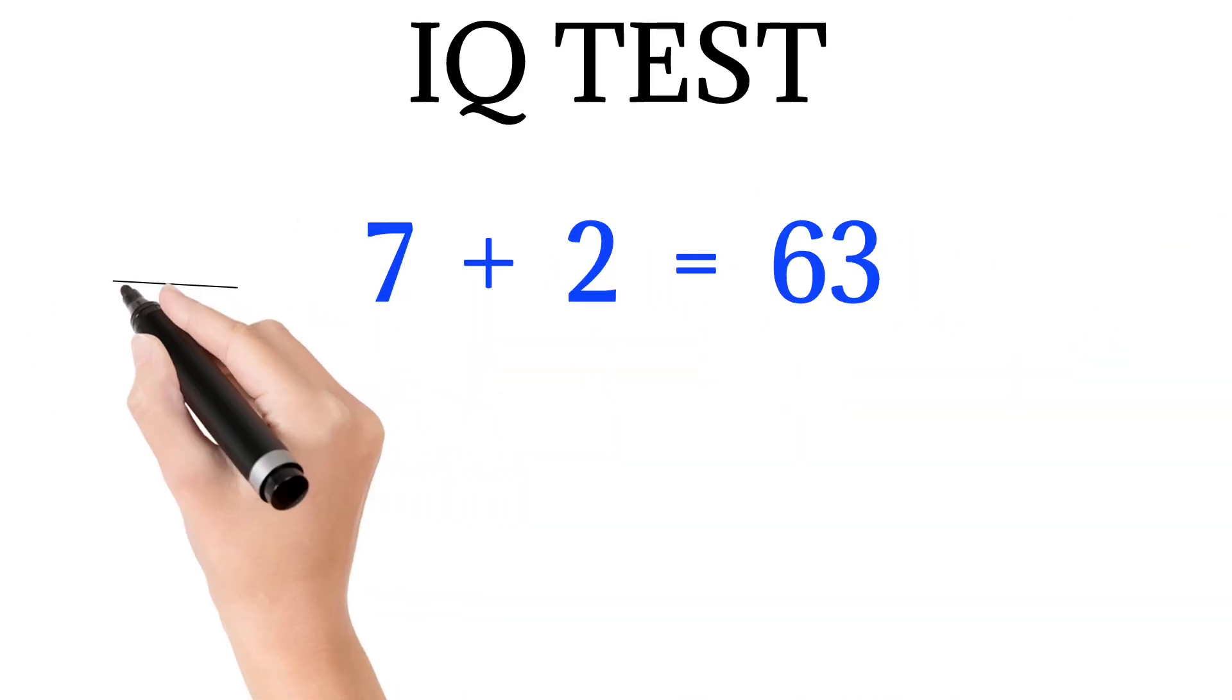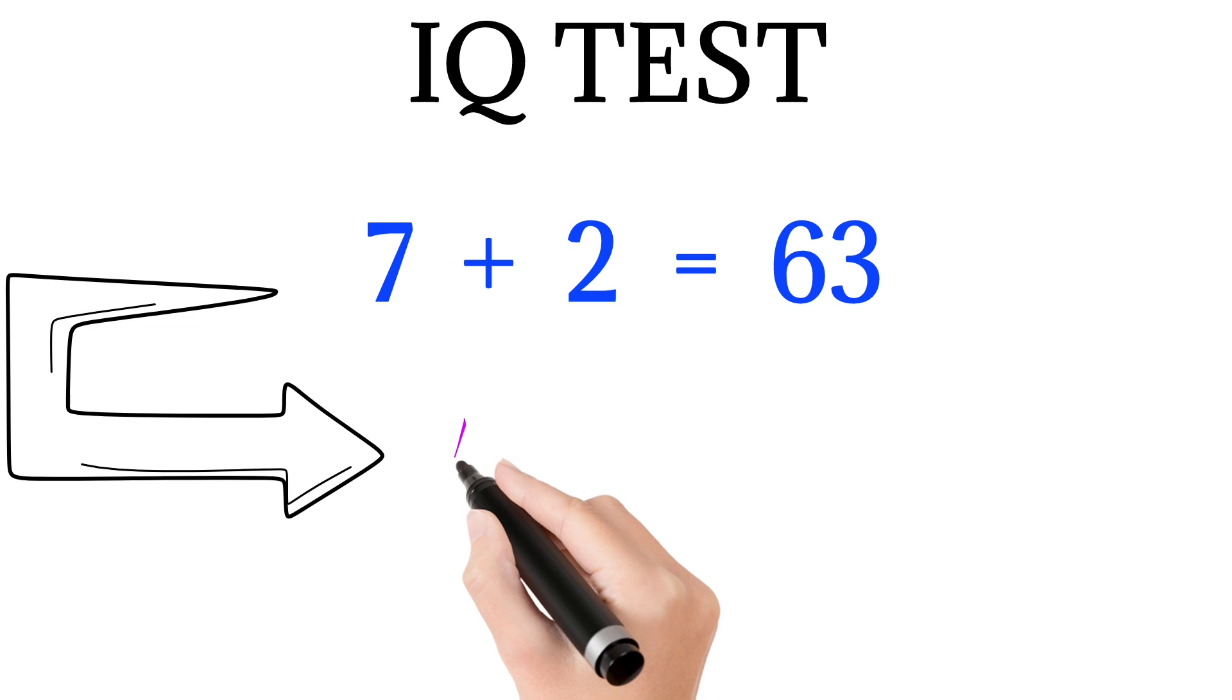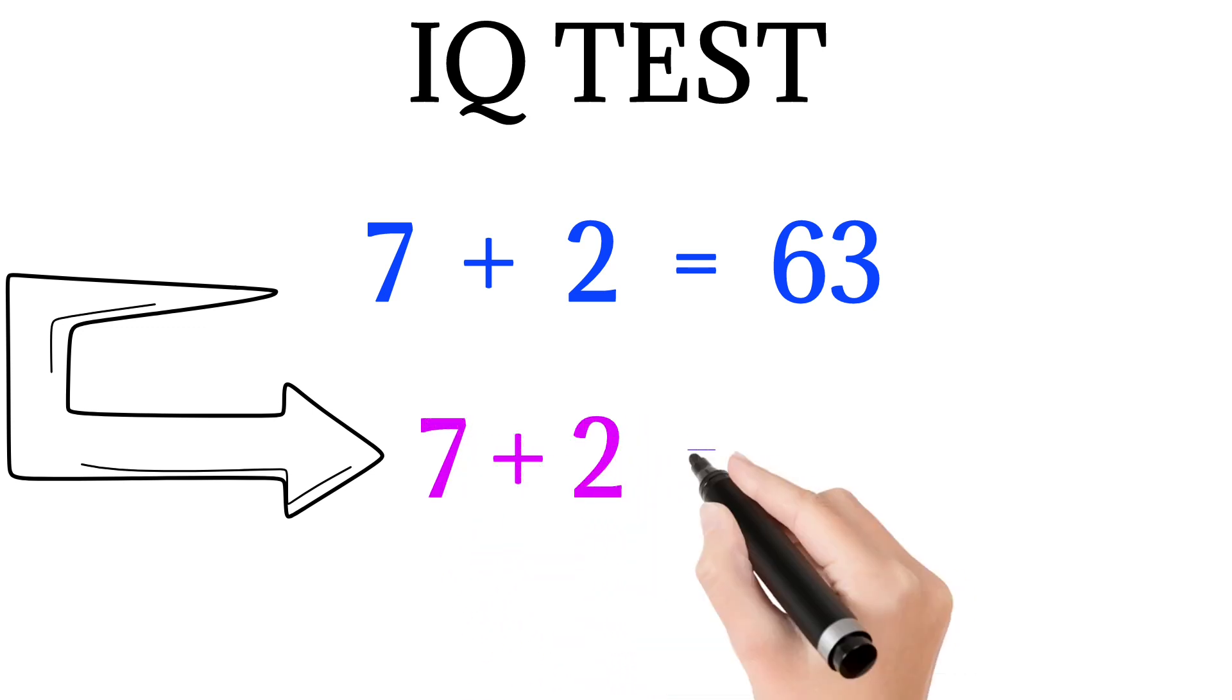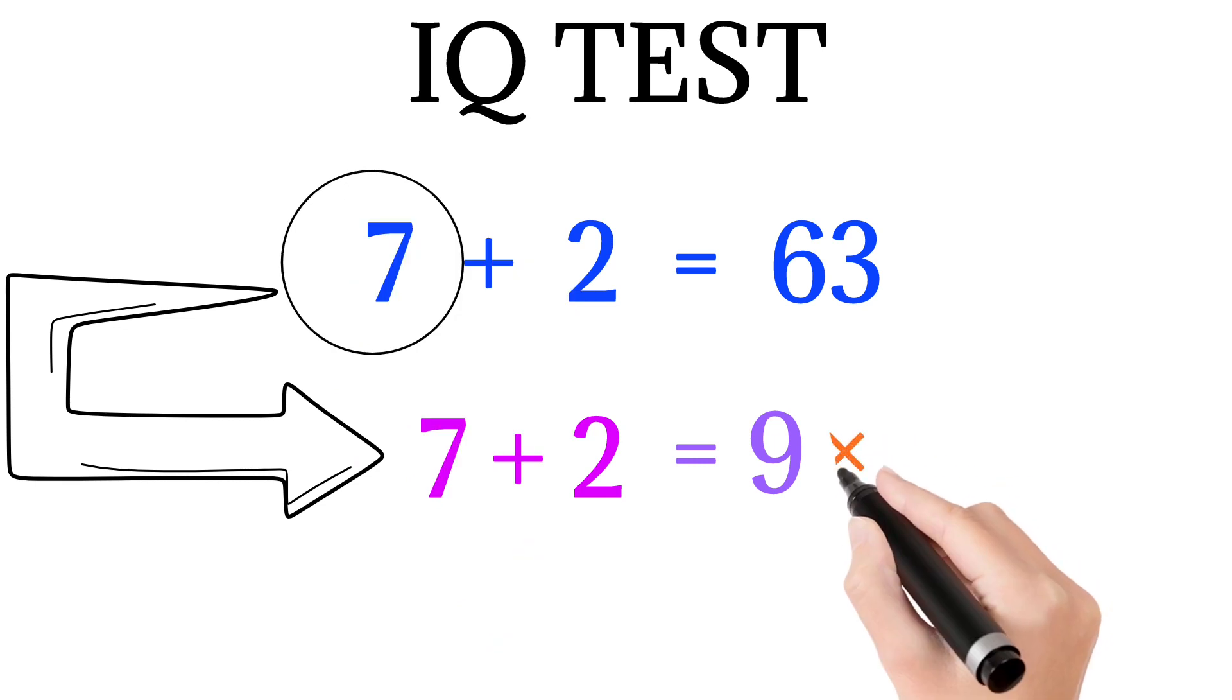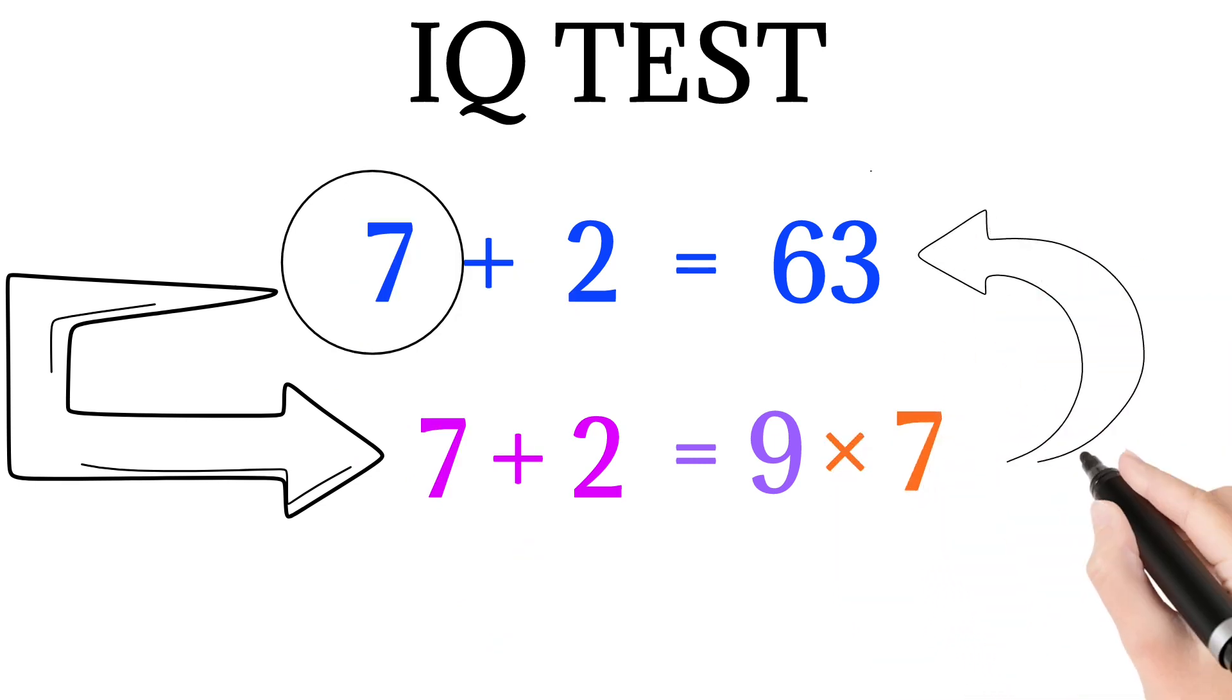Here also, if we add both the numbers, that is 7 plus 2, we get 9. And now if we multiply it with the first number, that is 7, we get 63.